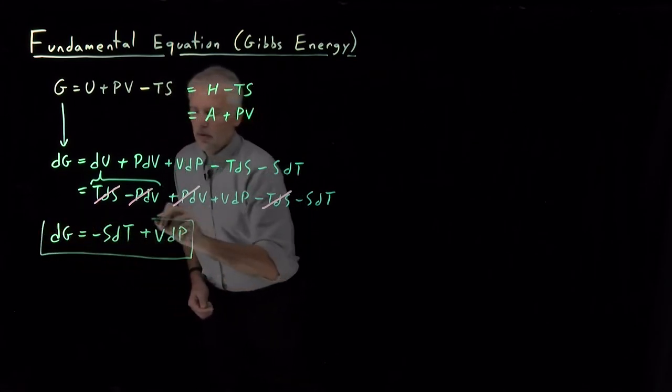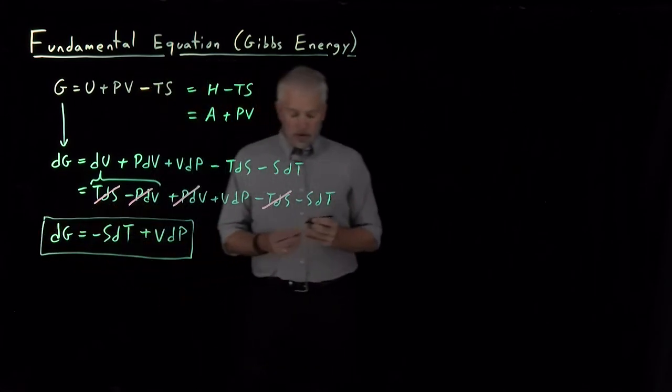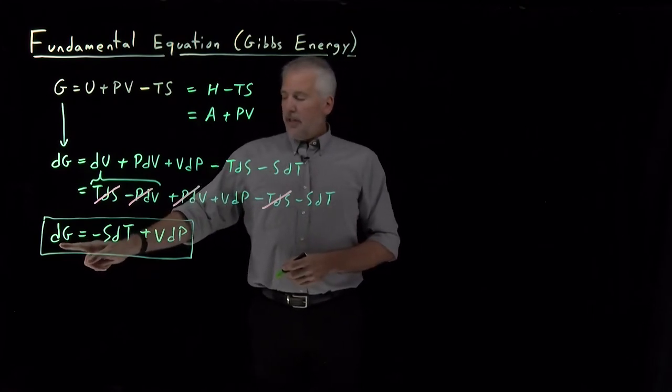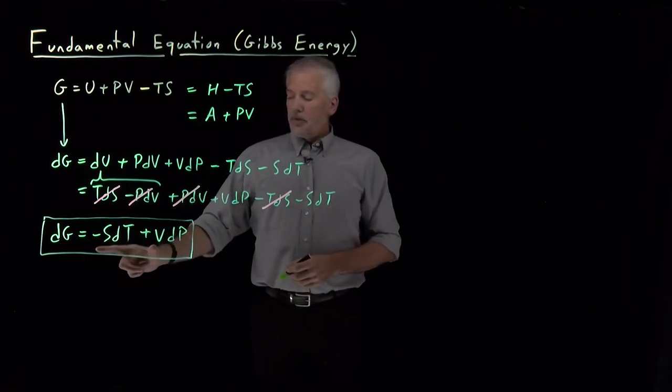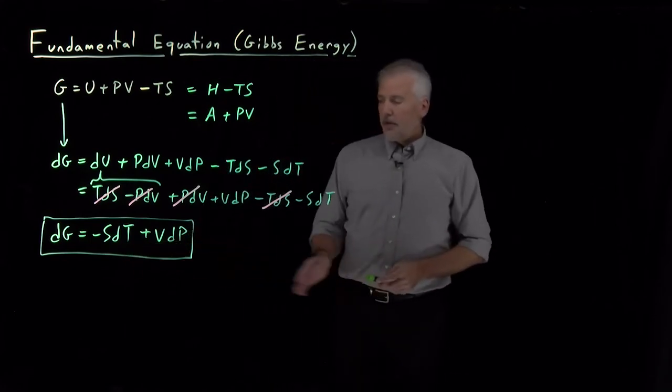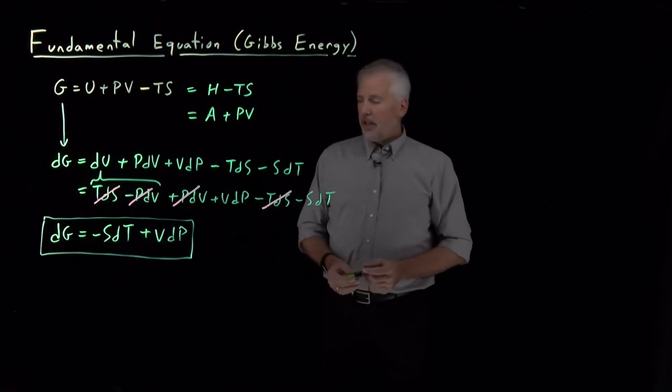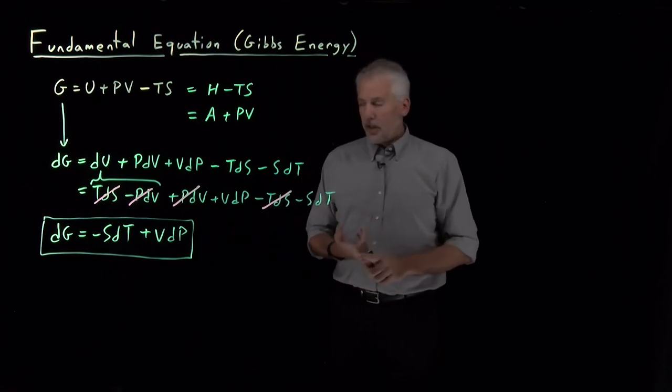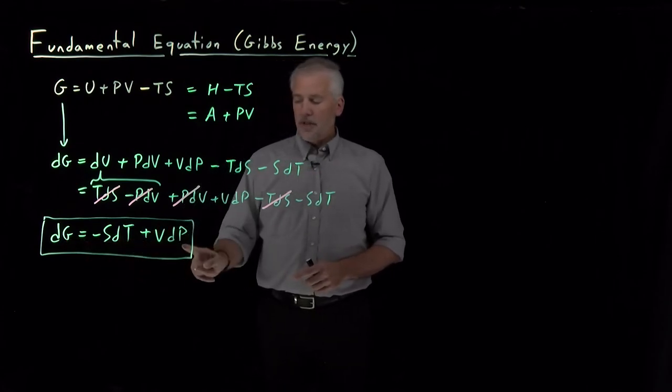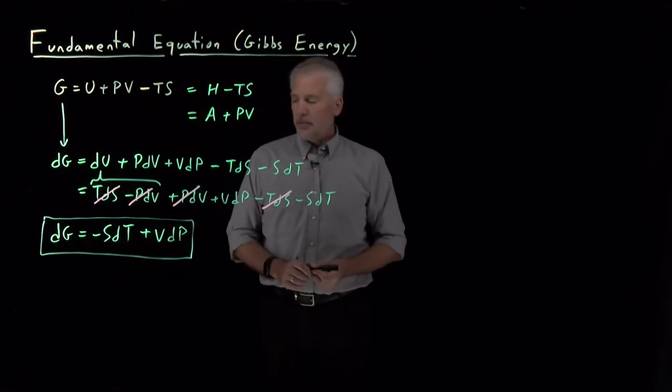So, that form should be looking fairly familiar by now. Differential change in some flavor of the energy is some thermodynamic variables multiplying some changes in other thermodynamic variables. And what this fundamental equation tells us immediately is two things. It tells us the natural variables of the function. G, when thought of as a function of T and P, has a relatively simple form.